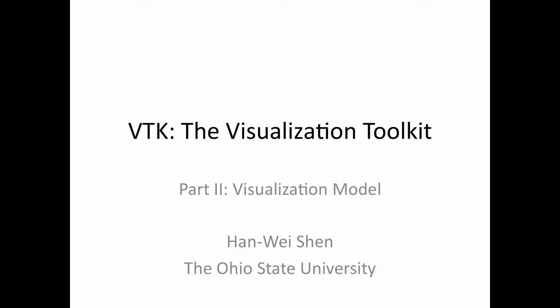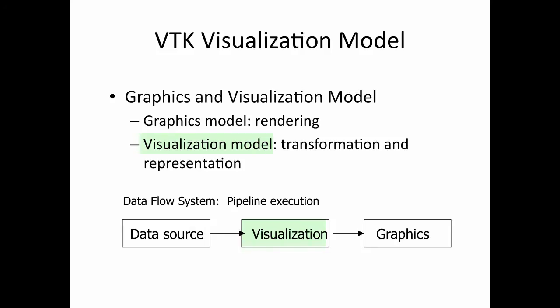Welcome to the topic of VTK, the visualization toolkit. Today I'm going to cover Part 2 of our two-part series, focusing on the visualization model. Remember last time we discussed that VTK has two object models: the graphics model and the visualization model. The graphics model performs rendering, taking the output of the visualization model to generate an image. The visualization model, on the other hand, is to transform and represent the data. In terms of pipeline, the visualization model follows immediately after the data source and produces output to the graphics model. There is one object called mapper that sits in the middle of the visualization model and the graphics model — basically a mapper converts geometry into a format that can be rendered.